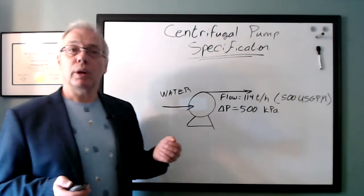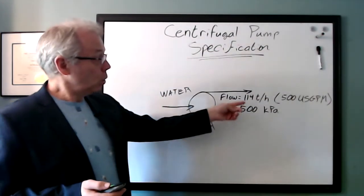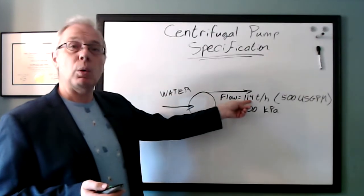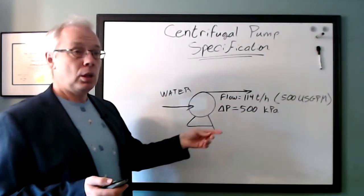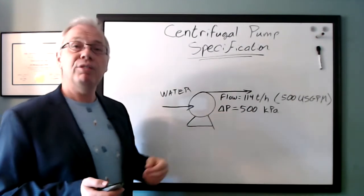We will look at an application where we are pumping 114 tons an hour of water, which is 500 US gallons per minute, with a pressure rise of 500 kPa.